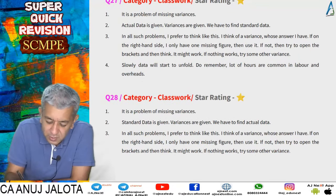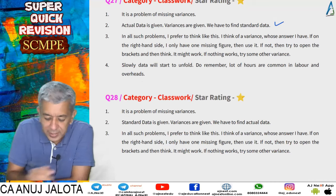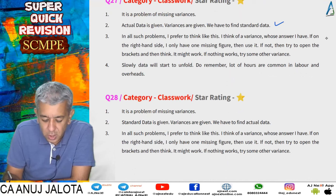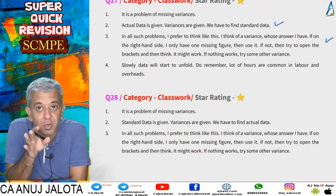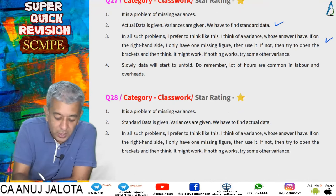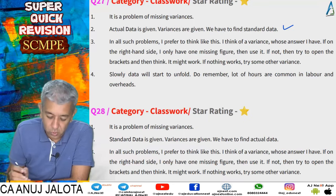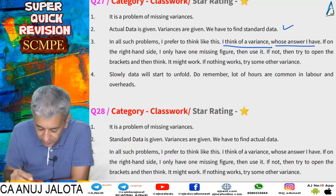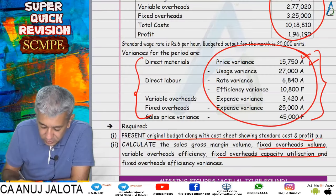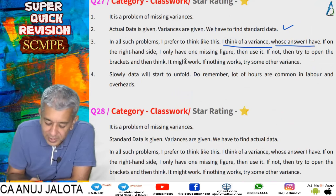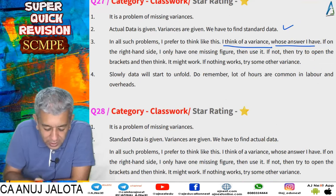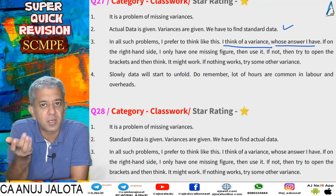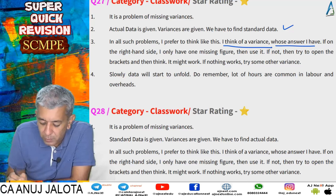Question 27 is a problem on missing figures: actual data is given, variances are given, and we have to find out the standard data. In such problems, think of a variance whose answer you already have. If the right-hand side has only one missing figure, use it directly. If not, try opening the brackets — it might work. If nothing works, try some other variance; slowly data will start to unfold.